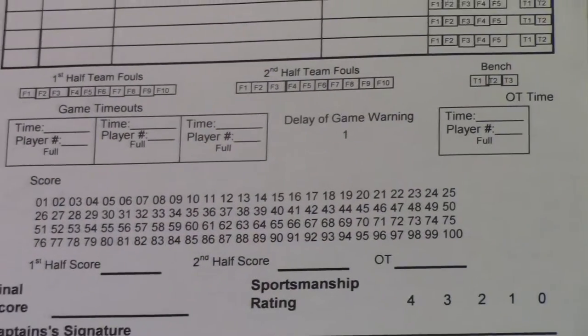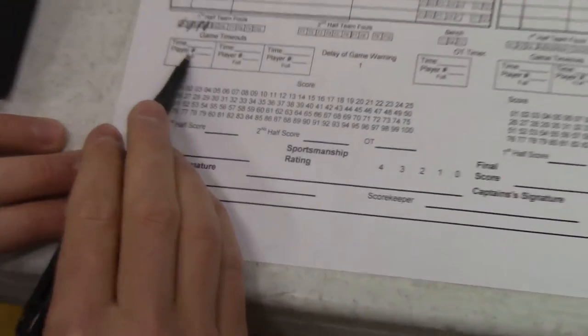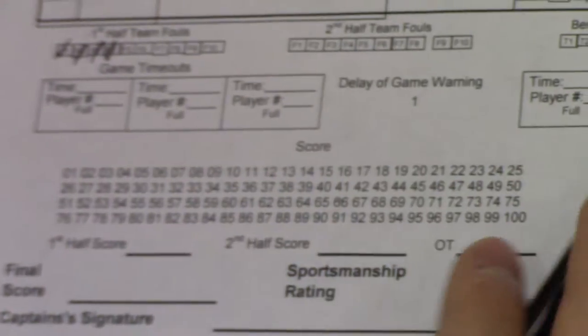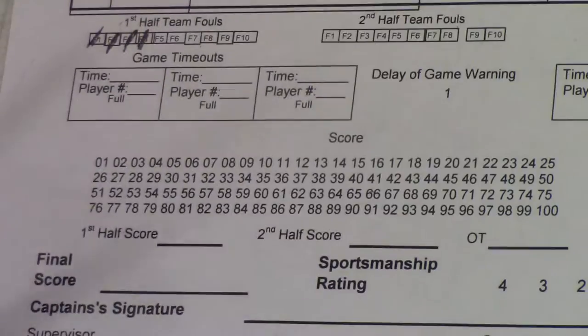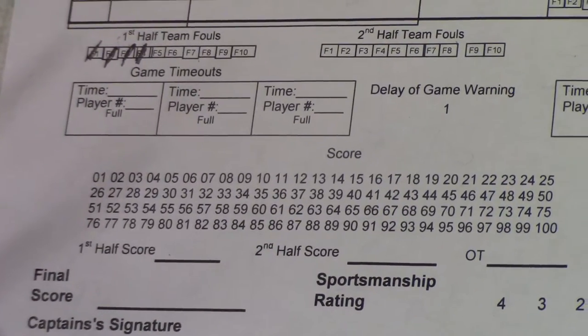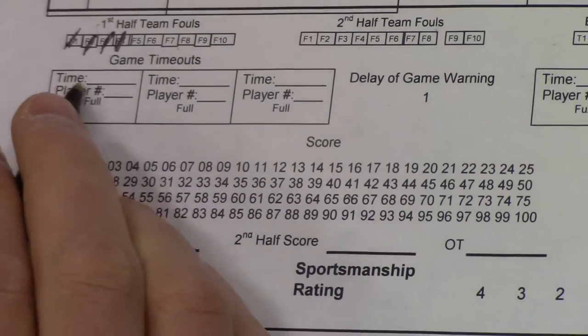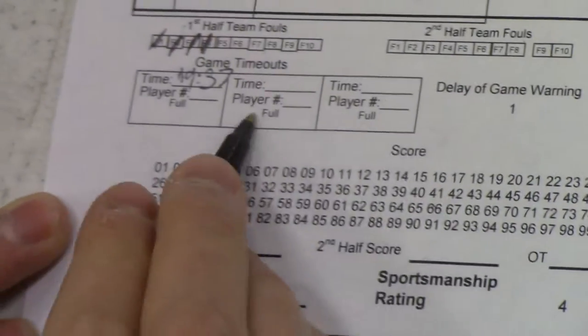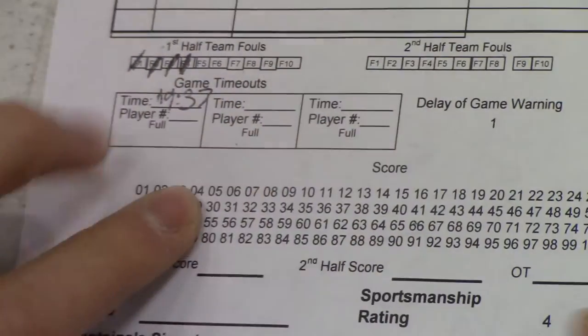Each team gets 3 timeouts per game. When a timeout occurs the clock is stopped, and you simply write the time shown on the scoreboard when the timeout was called. For example, if the visiting team calls timeout at 19:37, we mark it on the sheet. Now we know they only have two timeouts left — that part is straightforward.